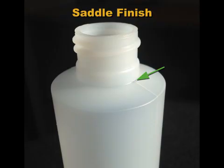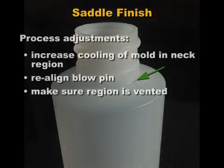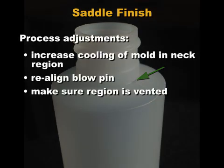Saddle finish is a depression at the neck of the bottle where the two mold halves come together, giving the appearance of a saddle. The neck region is the most difficult to cool, so this plastic cools last and shrinks the most, causing the depression. The solution is to increase cooling in the neck region so the surface becomes more rigid. Another possible cause is a misaligned blow pin; a third possibility is air entrapment — make sure this region is vented.